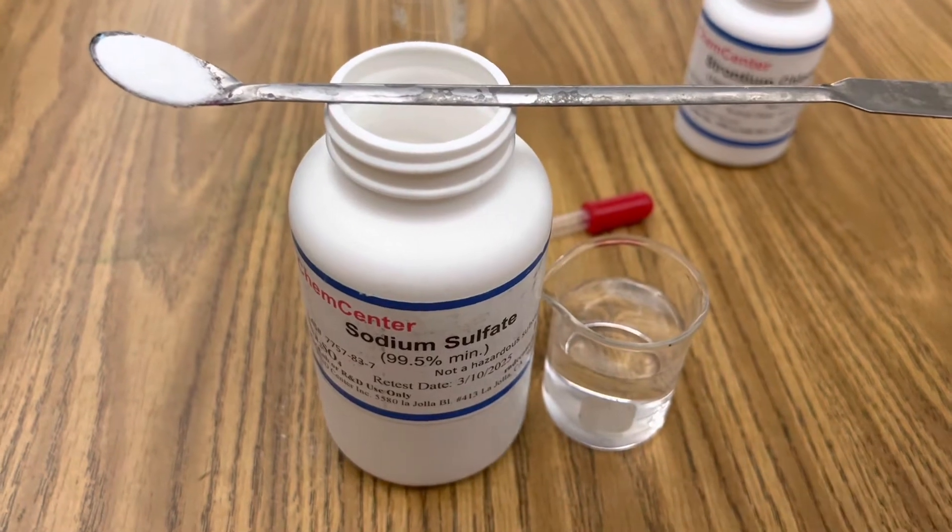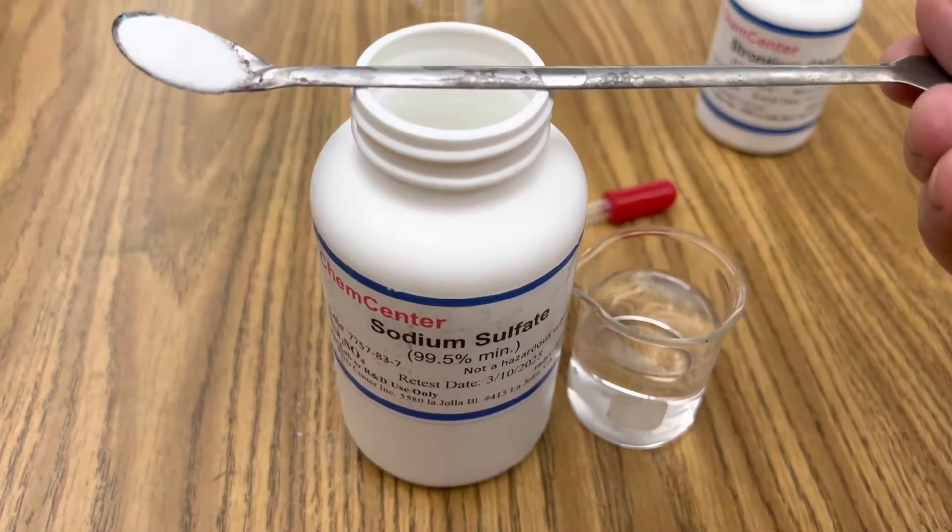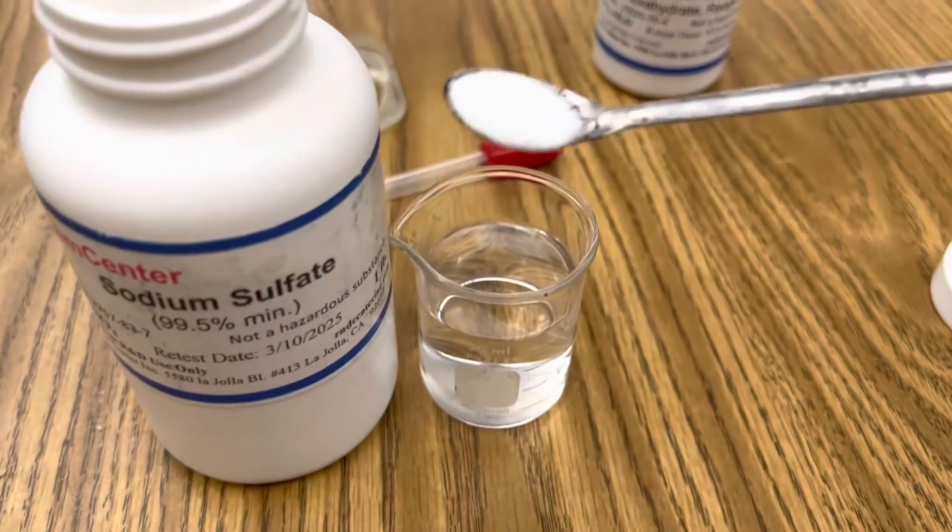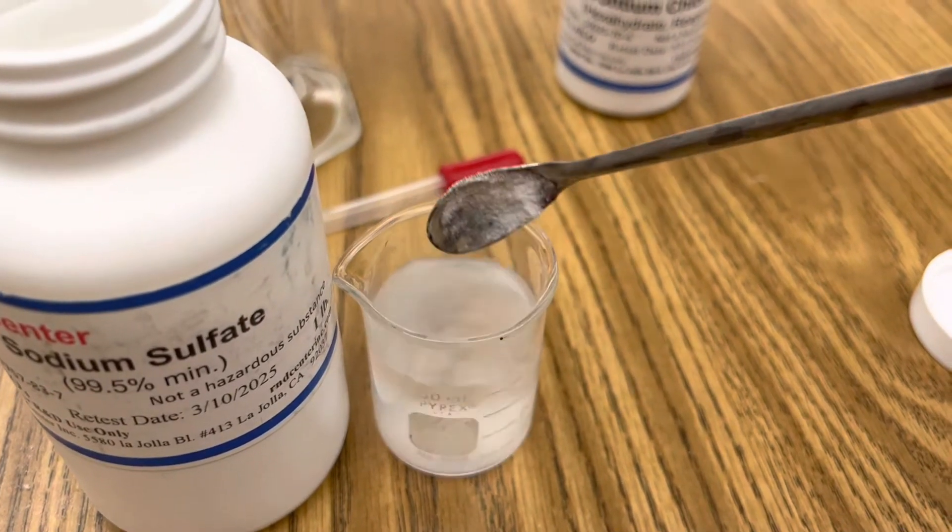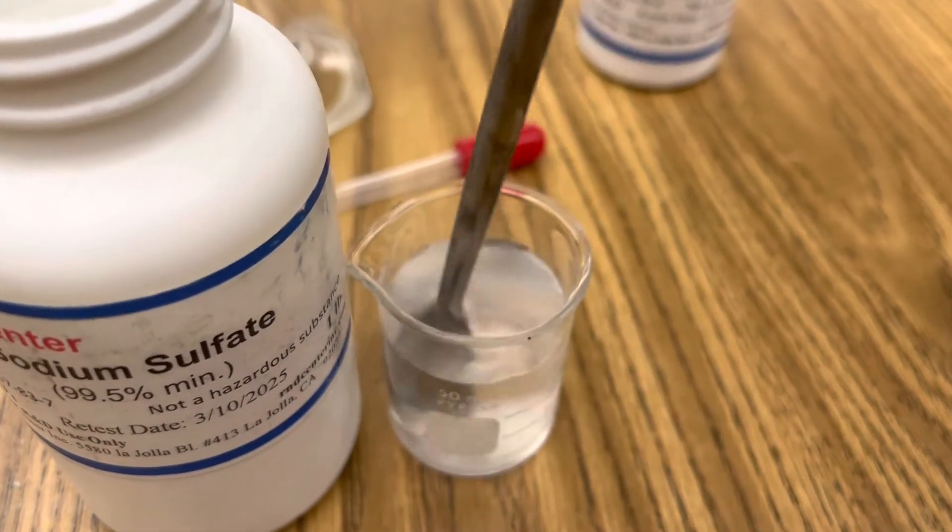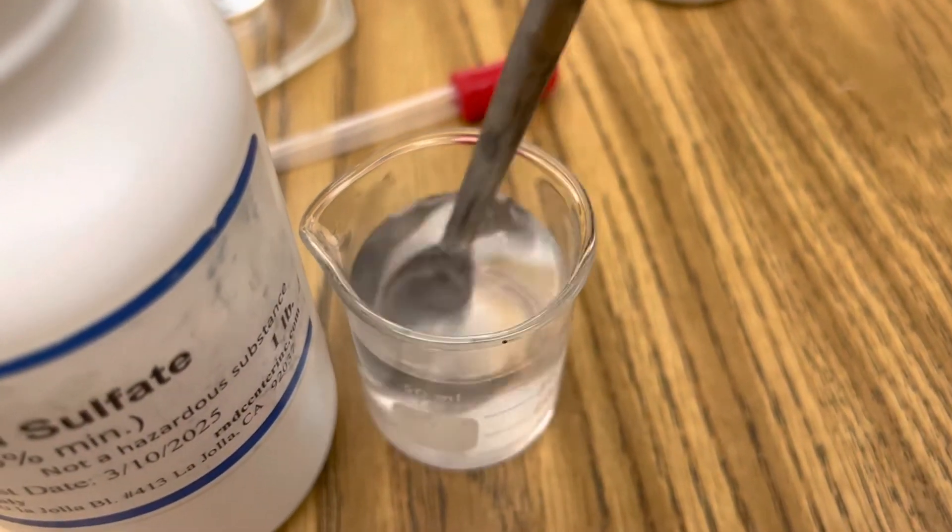Begin by creating an aqueous solution of sodium sulfate by adding 4 grams of sodium sulfate to 40 milliliters of distilled water and stir it until your solution is aqueous.